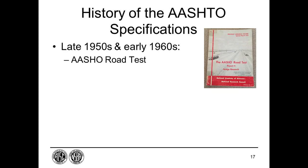Along with the federalization of the highway system came a major federal commitment to fund university research. One of the more significant bridge research projects was the AASHO Road Test, conducted on an outdoor test facility in Ottawa, Illinois in the late 1950s and early 1960s. The project was sponsored by AASHO and administered by the Highway Research Board with the approval of the National Academy of Sciences. In December 1951, the scope of the project was expanded to include several test bridge spans in the test track loops.